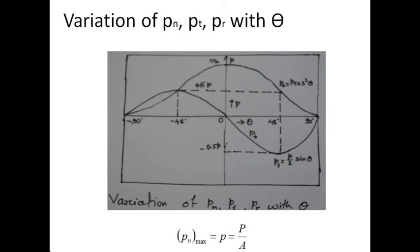When theta is 0, the plane PQ becomes a cross-section MN, and hence the graph shows that Pn is equivalent to small P. This is expected — as the value of theta increases, the value of normal stress Pn will decrease.